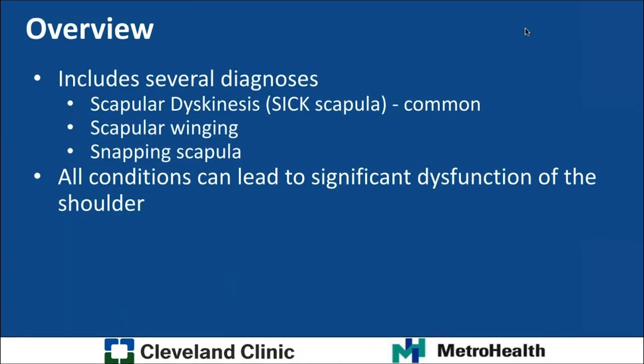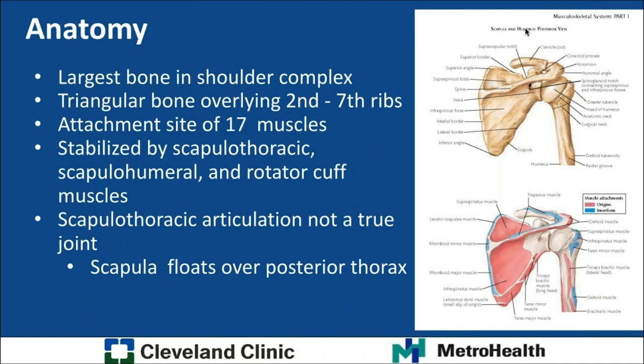Scapulothoracic dysfunction includes several different diagnoses, including scapular dyskinesis, sometimes referred to as SICK scapula syndrome, which is relatively common. There are also a couple more specific diagnoses including scapular winging and snapping scapula. An important unifying condition of all these is that they can lead to significant dysfunction of the shoulder.